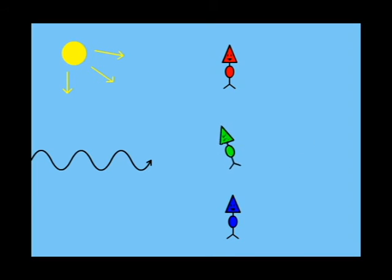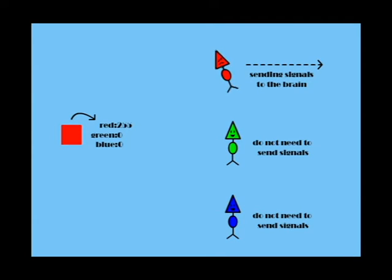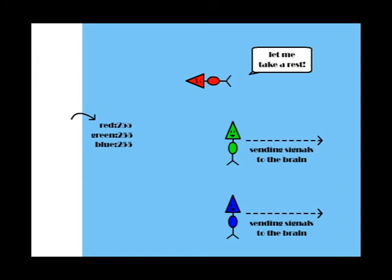However, these receptors will lose sensitivity gradually. Let's say you are looking at a red object. The red receptors will lose its sensitivity. Then you look at a white object immediately. The red receptors cannot generate signals to your brain for a few seconds, whereas the other two can still generate signals.